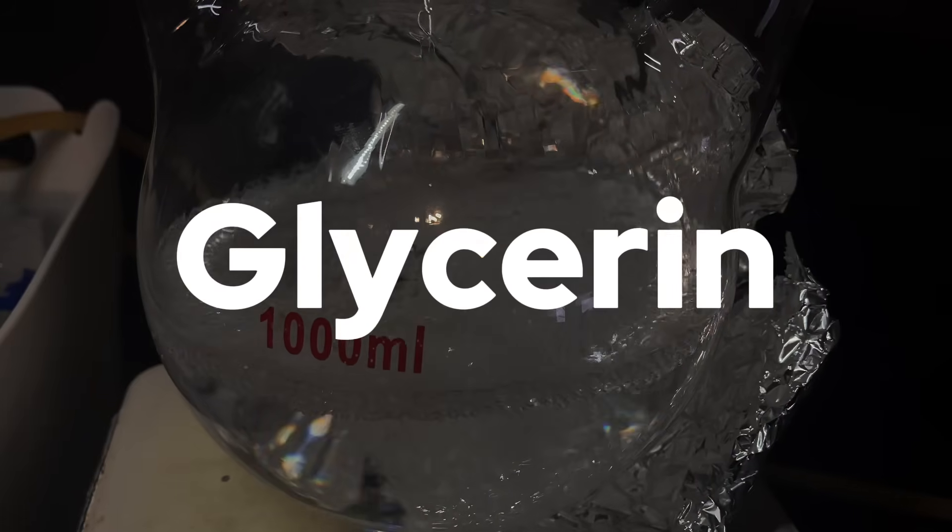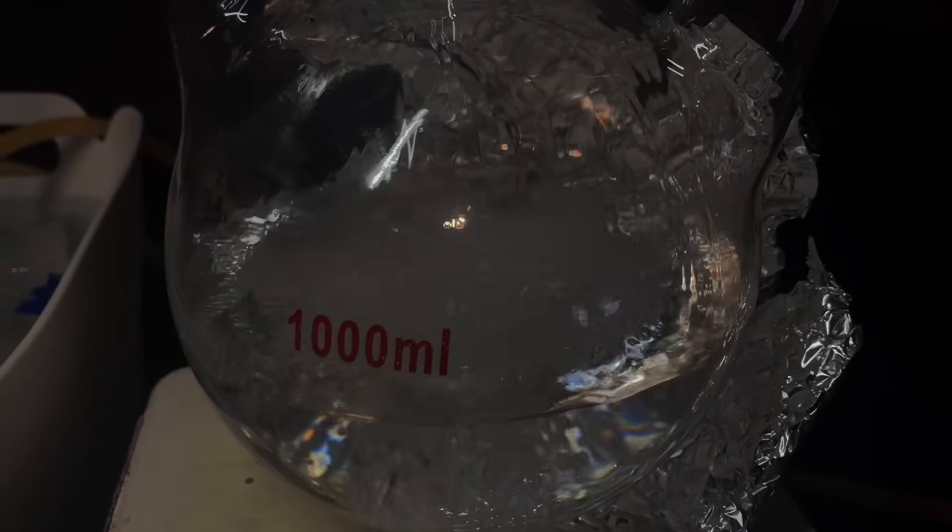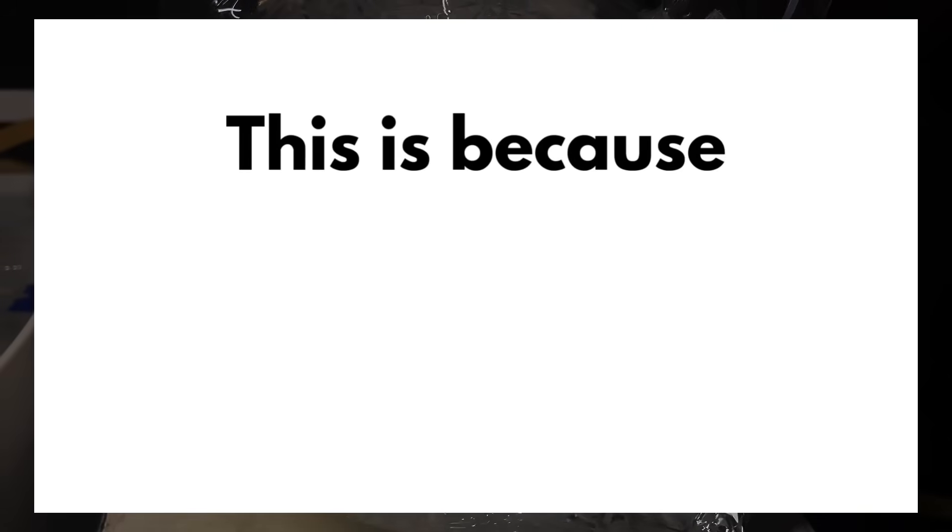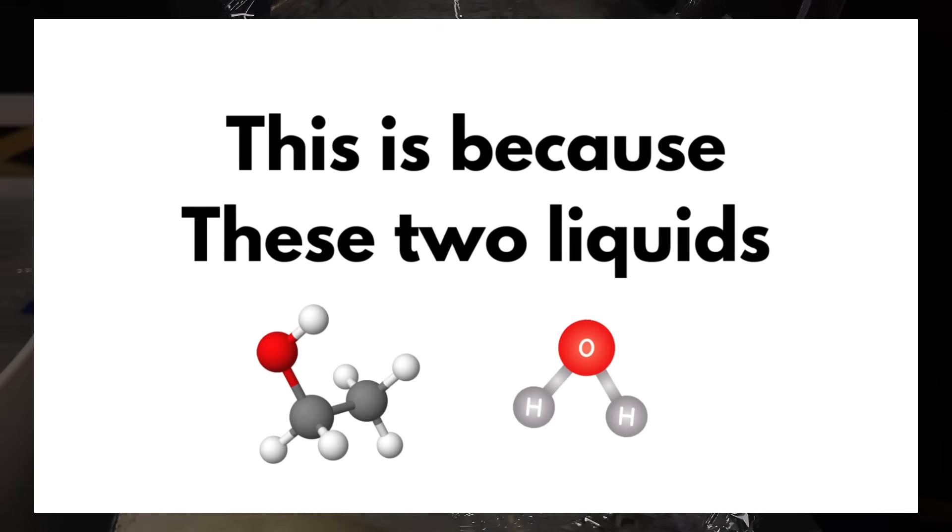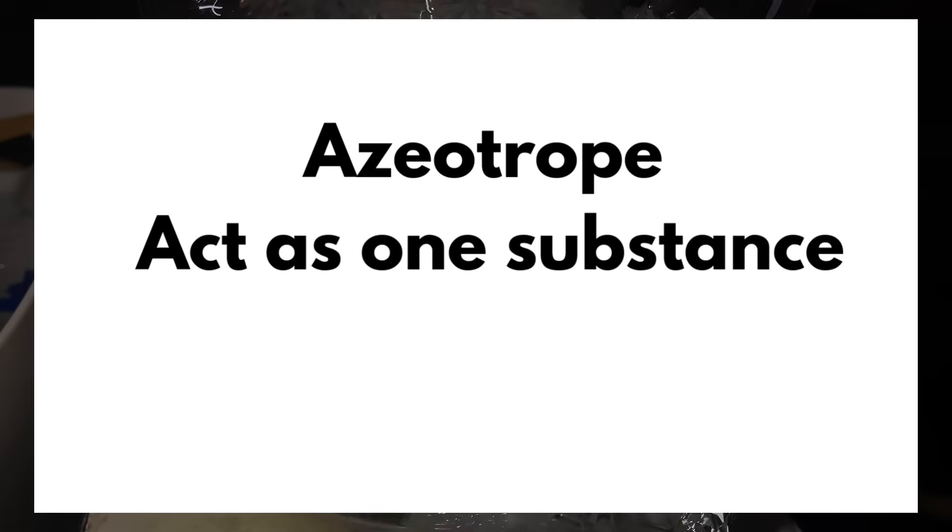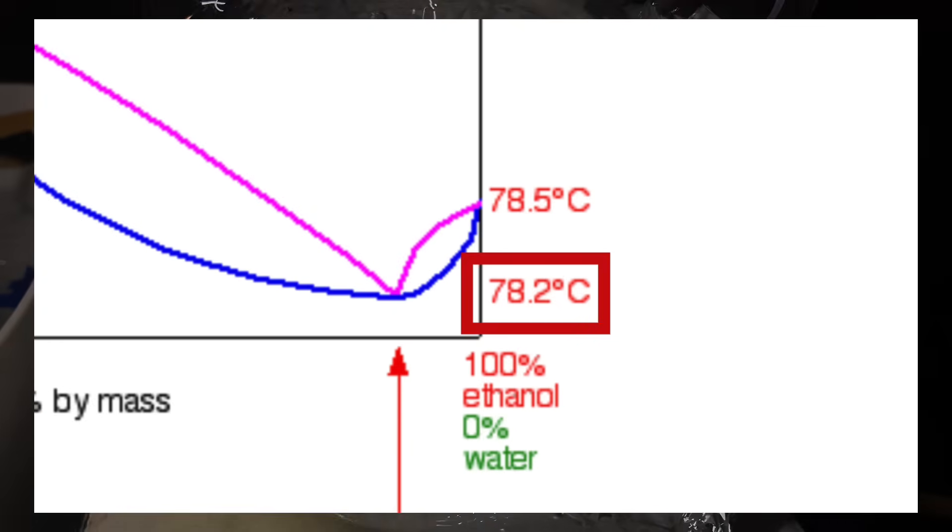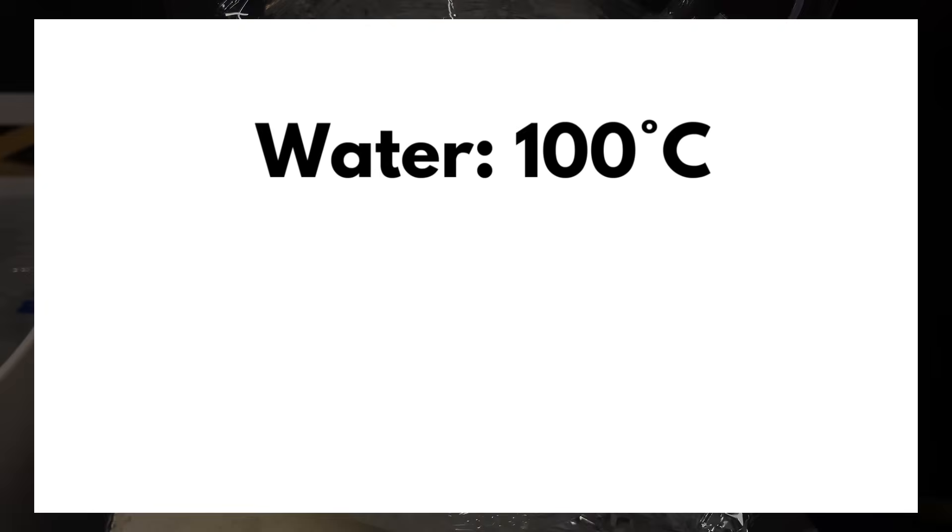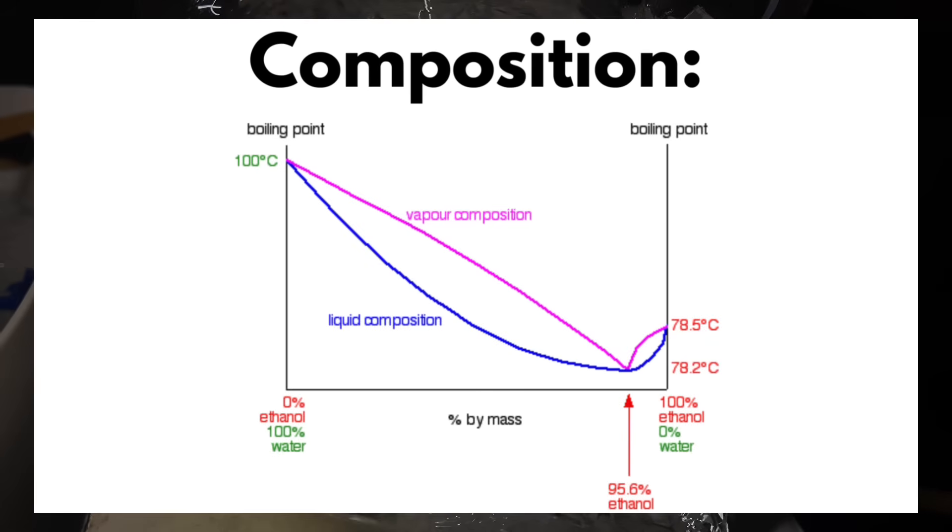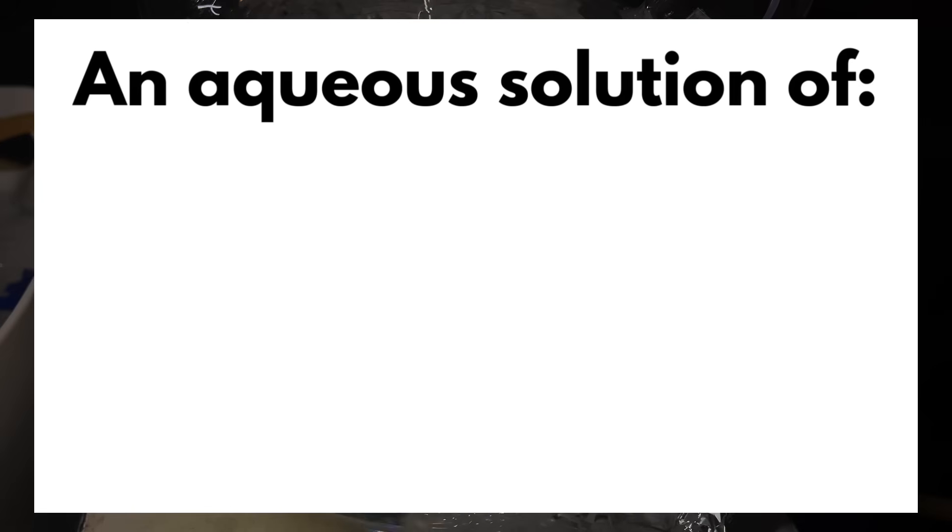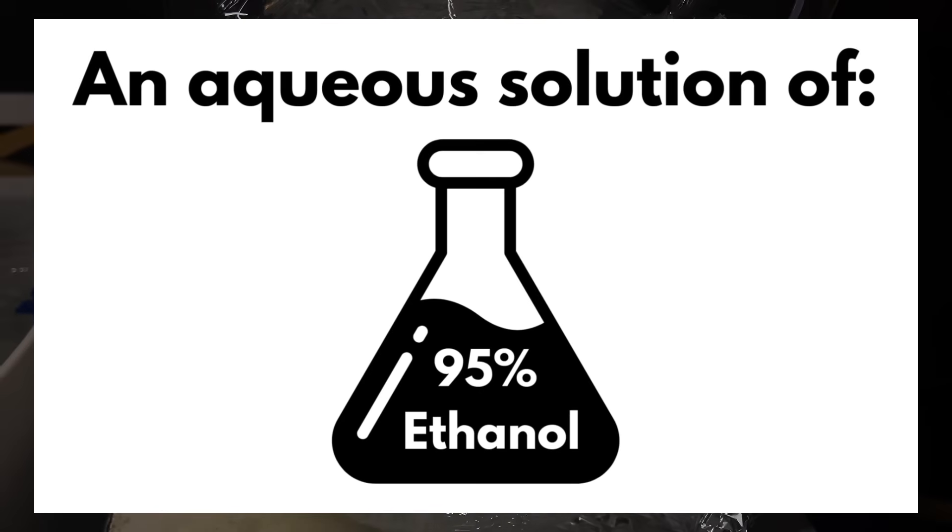In this distillation, glycerin and hydrogen peroxide boil at much higher temperatures so they'll be left behind in the flask, but ethanol and water will be tricky. This is because these two liquids form something called an azeotrope, which is when they act as one substance when being boiled and are inseparable by further distillation. The azeotrope boils at 78.2 degrees Celsius, which is lower than both the boiling points of that of water and ethanol, and the composition of the vapor is 95% ethanol to 5% water. This means that the maximum concentration we can get via distillation is an aqueous solution of just 95% ethanol.